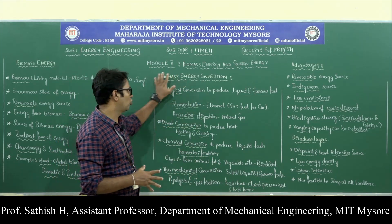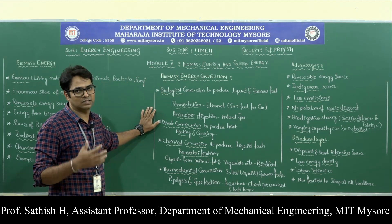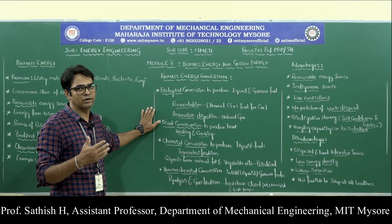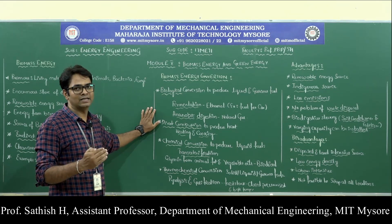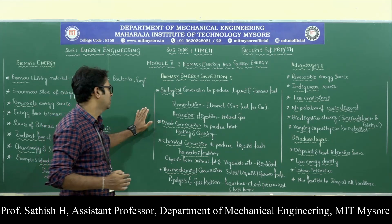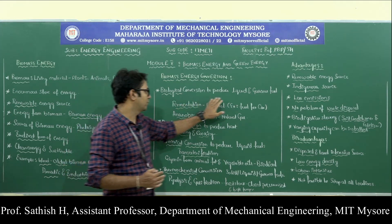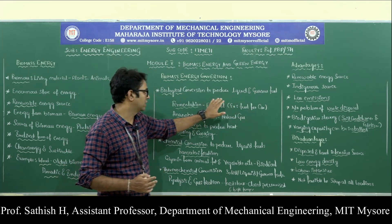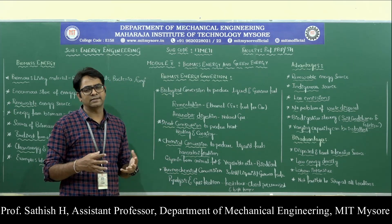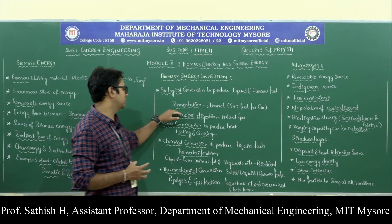These are the four important conversion methods that can be used to convert raw biomass energy into a useful form of energy. The first is biological conversion to produce liquid and gaseous fuel. One example is fermentation — fermentation is of course a biological process.